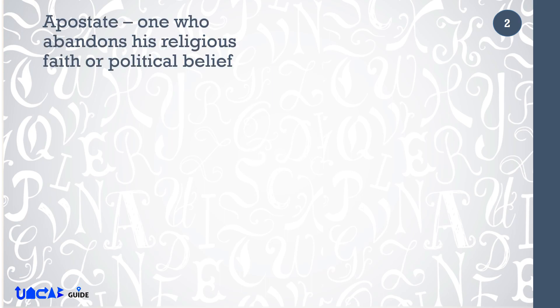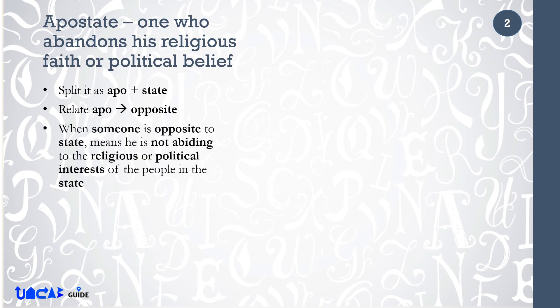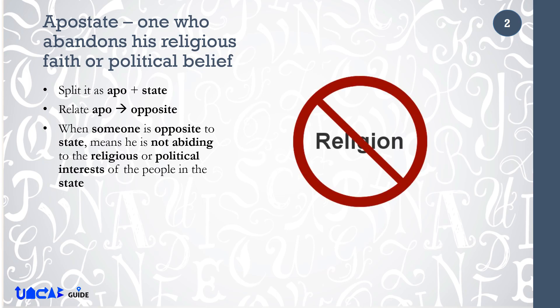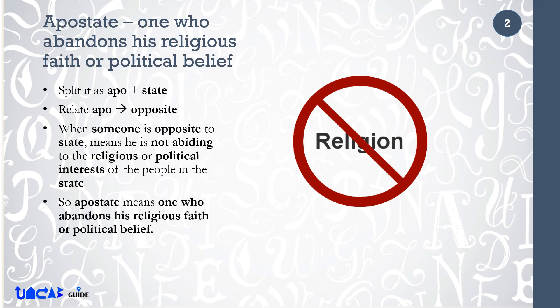Apostate means one who abandons his religious faith or political belief. Split it as Apo plus State. Relate Apo to Opposite. When someone is opposite to State, it means he is not abiding by the religious or political interest of the people in the State.